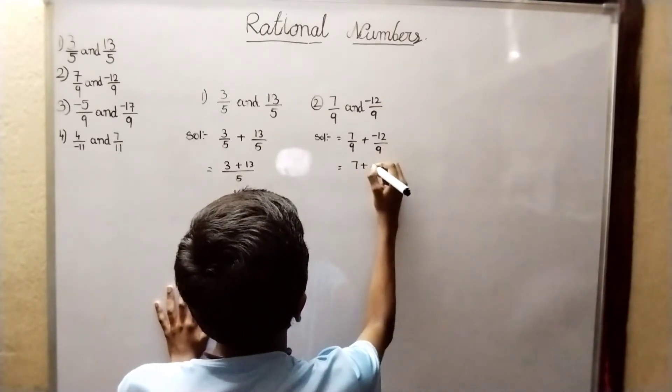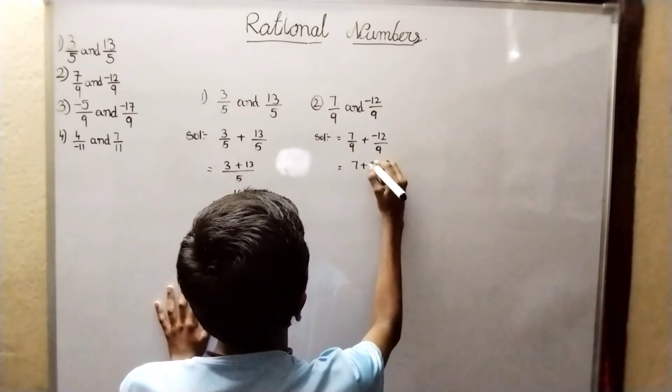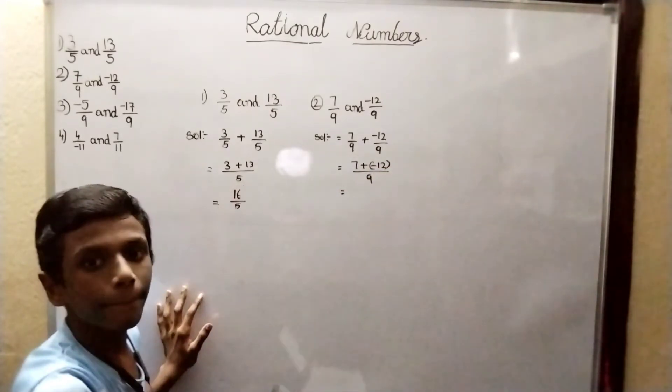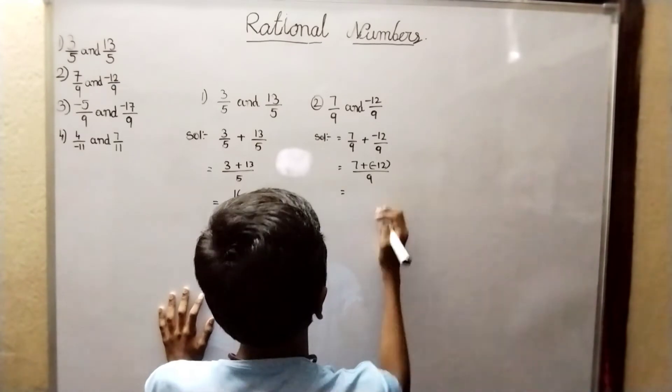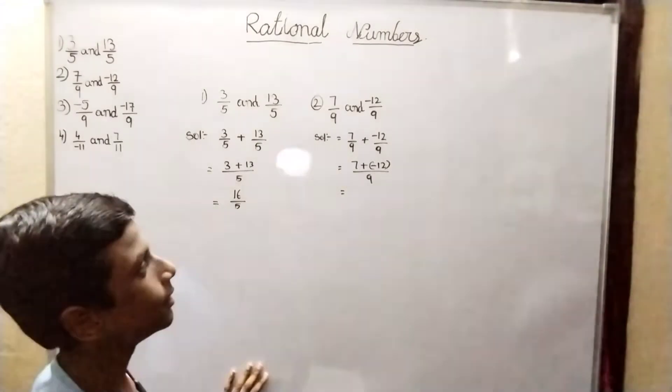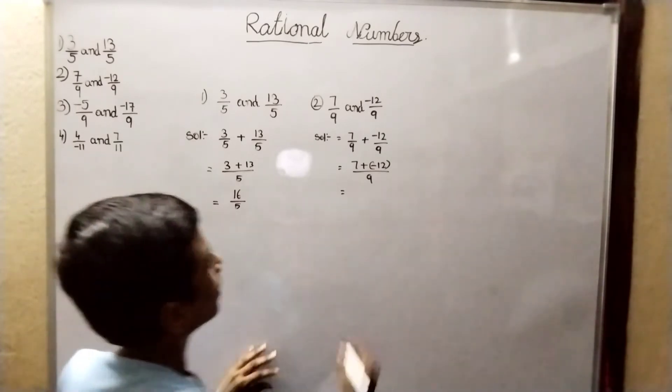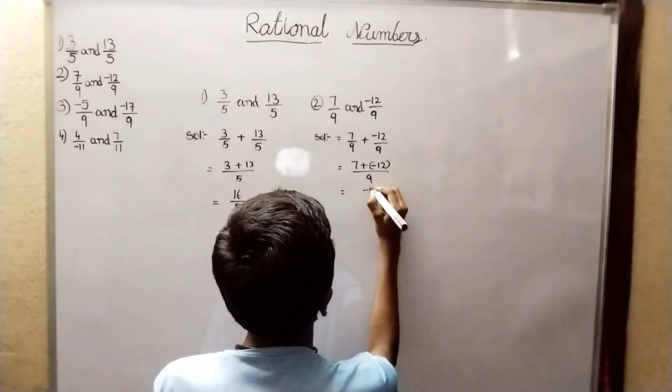7 plus minus 12 bracket by 9. Plus into minus is minus. 7 minus 12: 11, 10, 9, 8, 7, 6, 5. Minus 5 by 9.